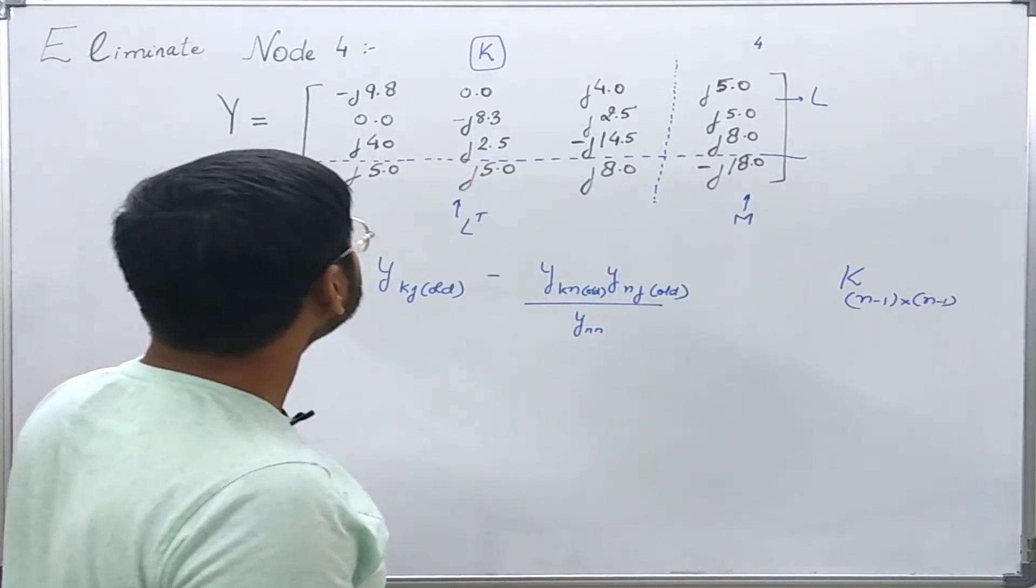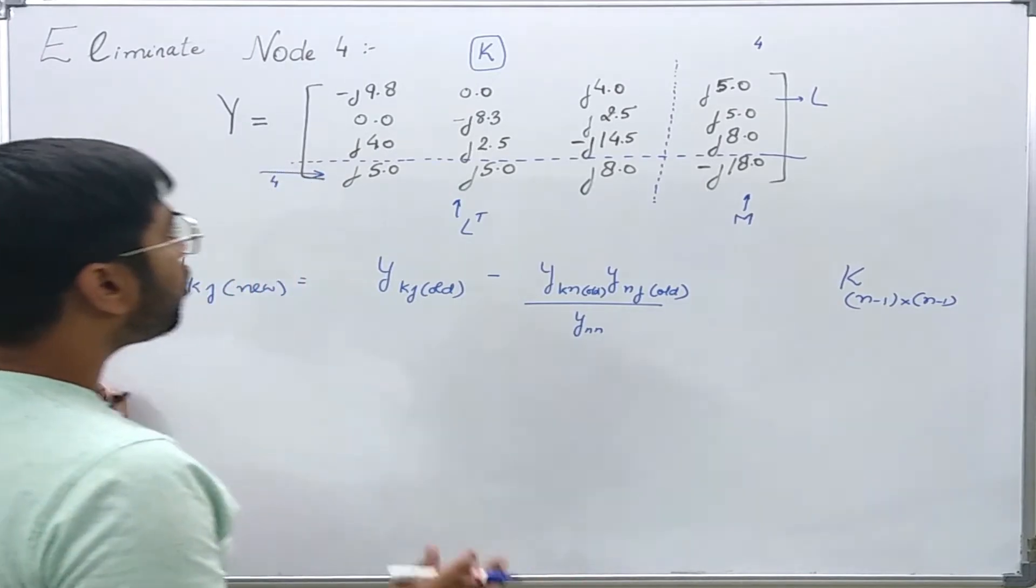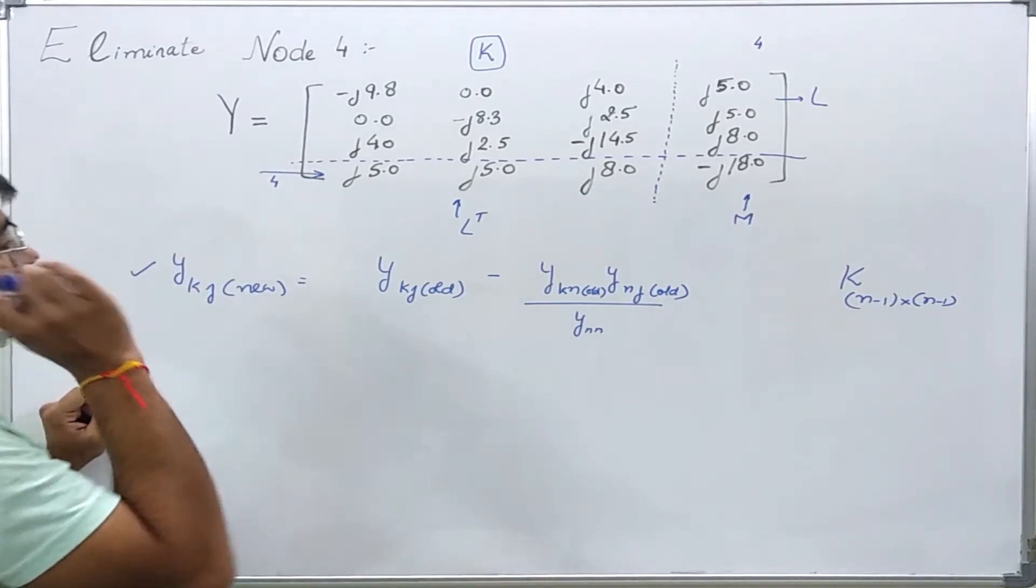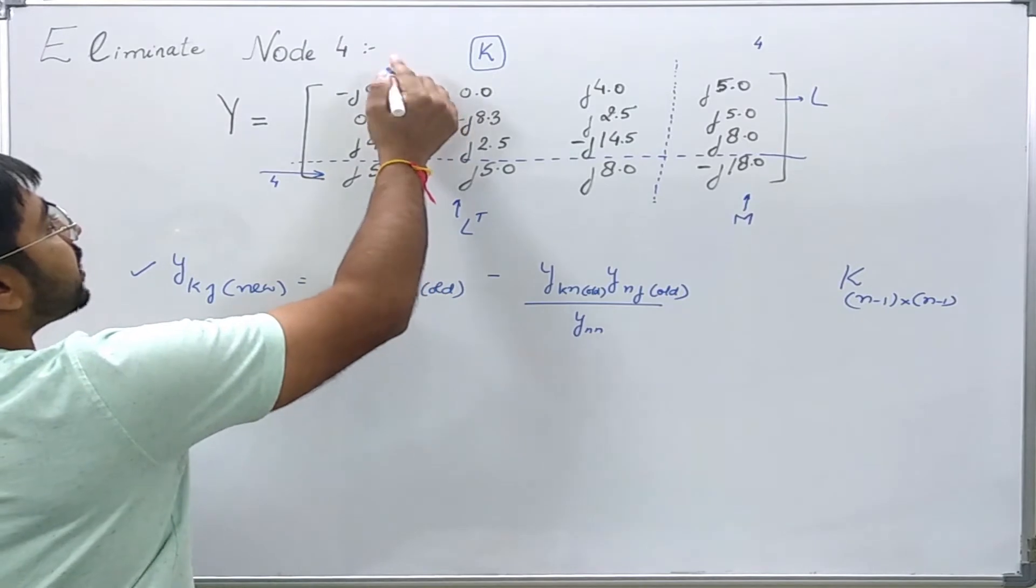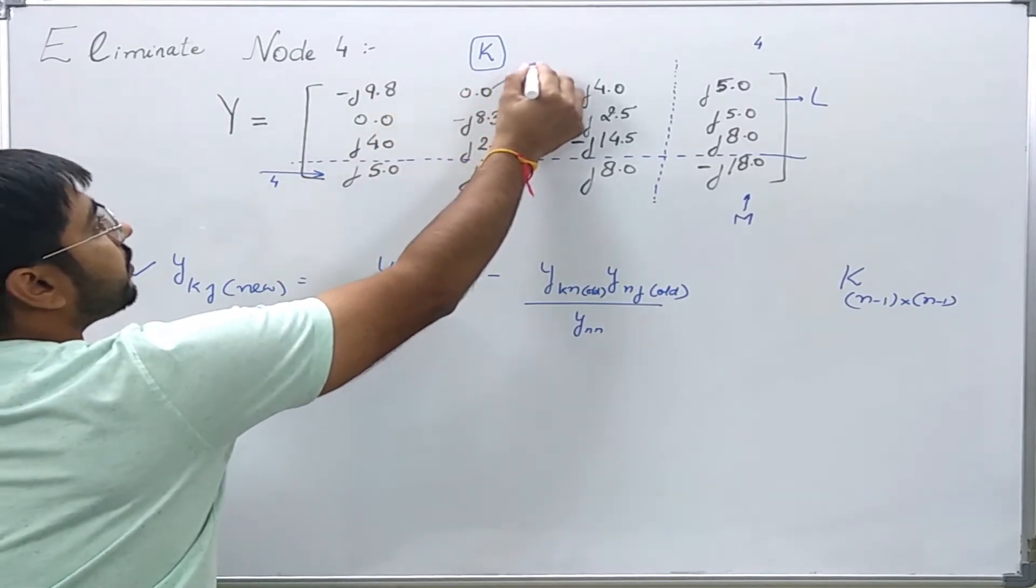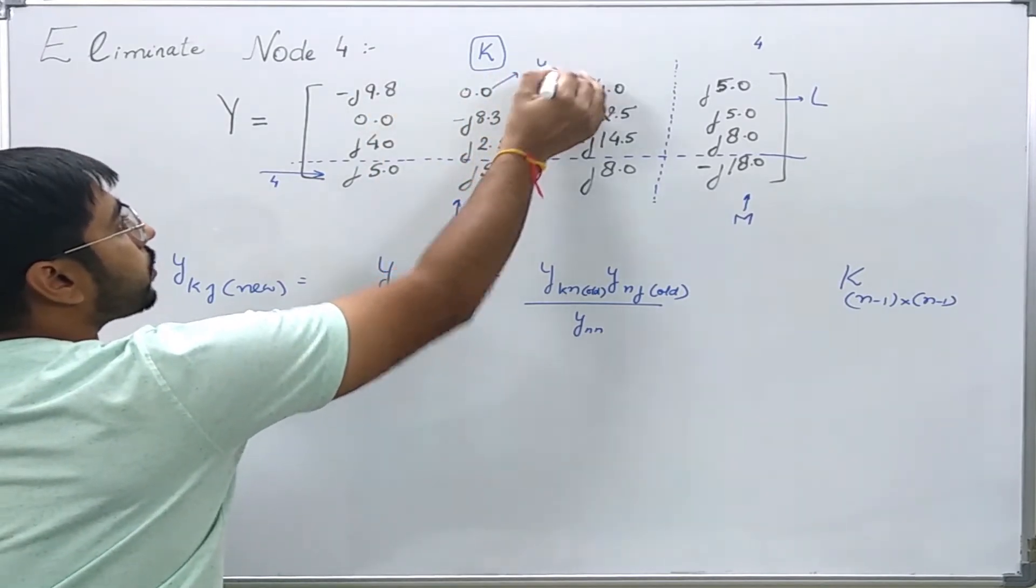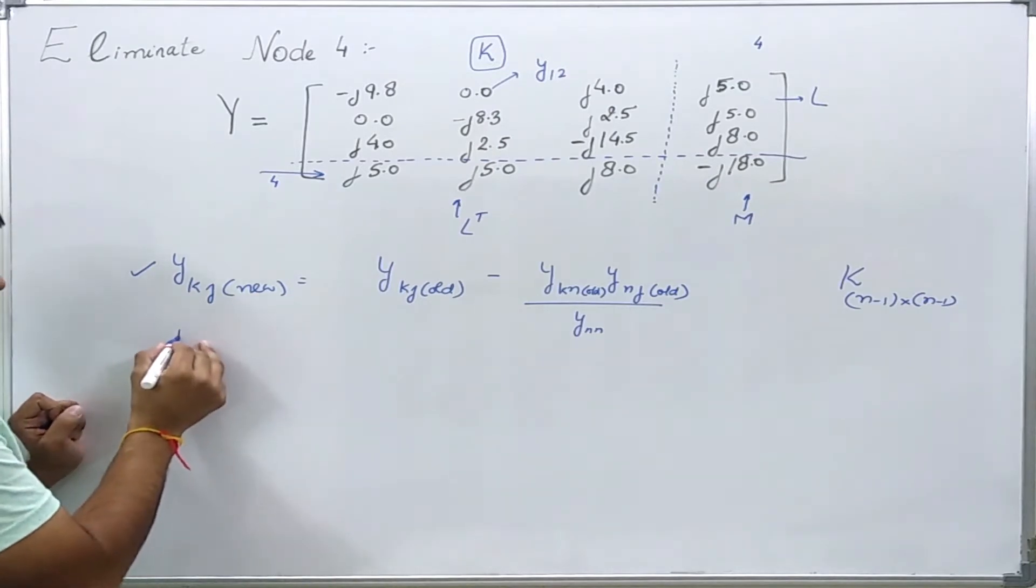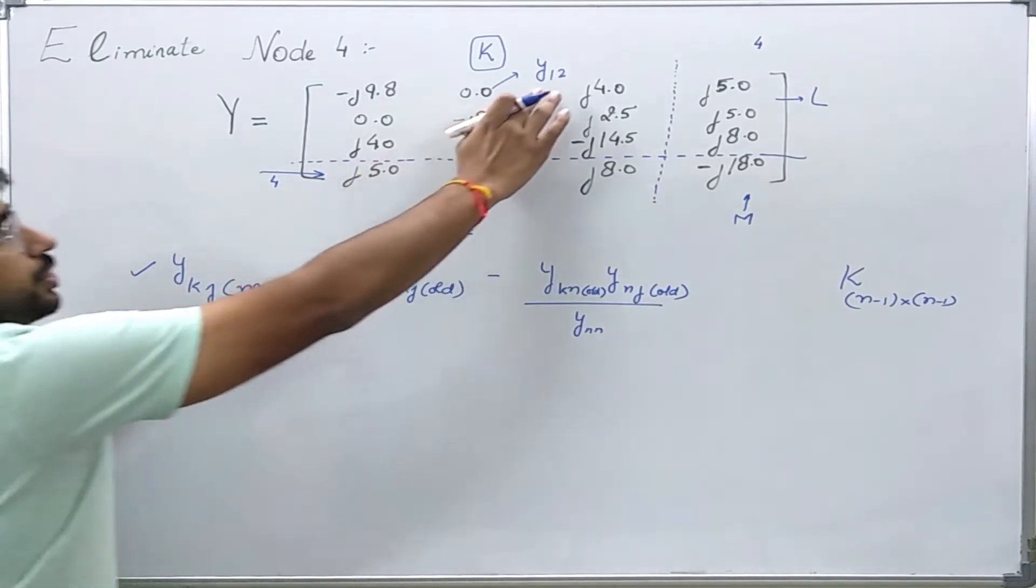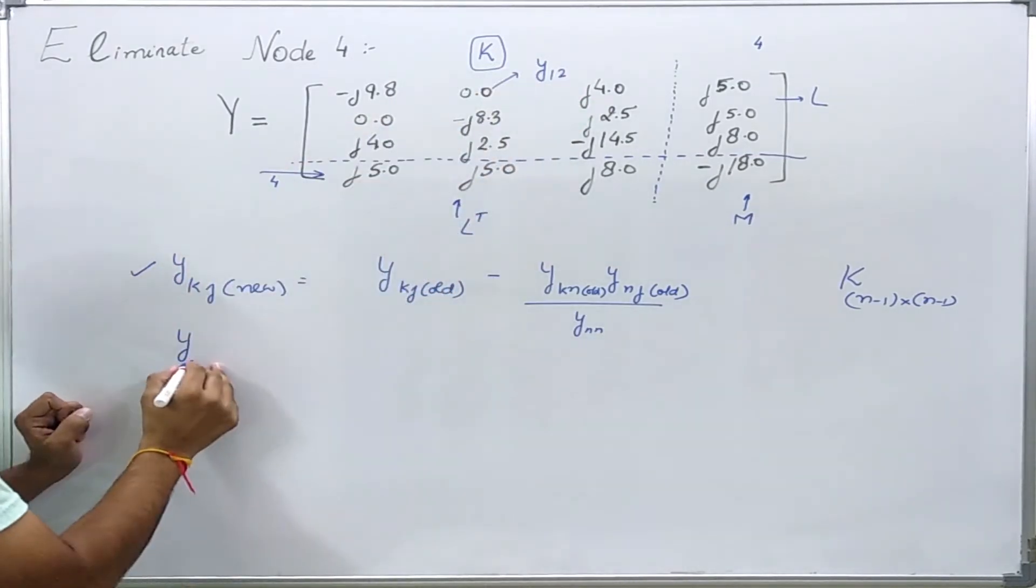So for example, if I want to eliminate, let us say, the element number this one Y₁₂, I want to find out this new element Y₁₂ new.